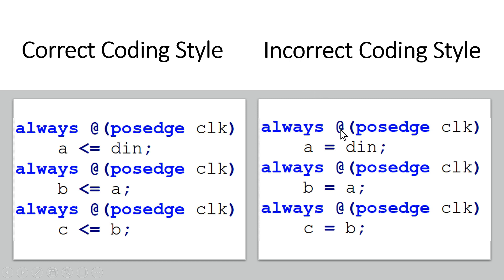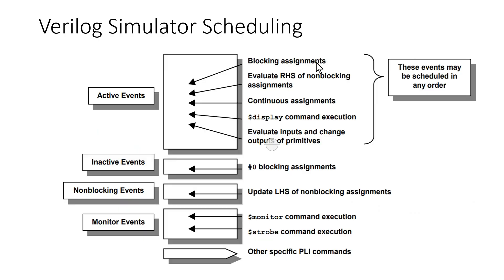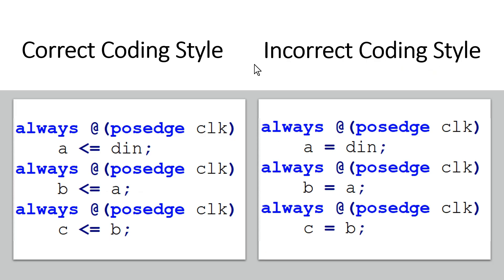Now let us see what happens when we use blocking assignment statements. As per Verilog simulator design guidelines, all blocking assignments come in the active events region, and it is a one-step process. The simulator comes to the first always block first because it appears first in the .v file, and din is immediately assigned to variable a. Then it moves to the second statement and immediately assigns the newly calculated value of a to variable b. In the third statement, it assigns the newly calculated value of b to variable c — which gives unexpected results.